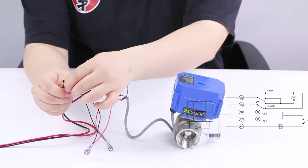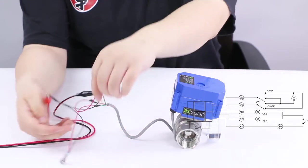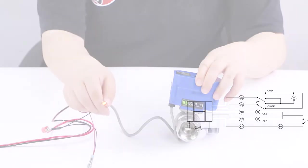Once fully closed, the red wire will output closed limited signal, and the red light is on.